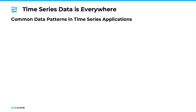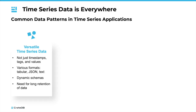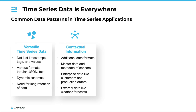What do all of these use cases have in common when it comes to data management? Time series data is often more complex than just a collection of timestamps, tags, and values. It can come in various formats, including Tabular or JSON, often includes textual data, and schemas might change without prior notification. Users oftentimes request a very long retention period to analyze patterns over time. To properly interpret these data points, contextual information is required, which is usually not time series data.